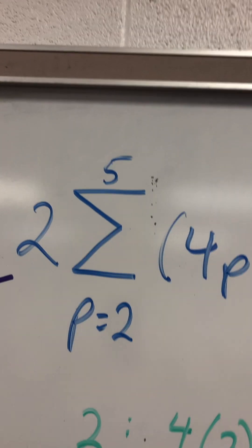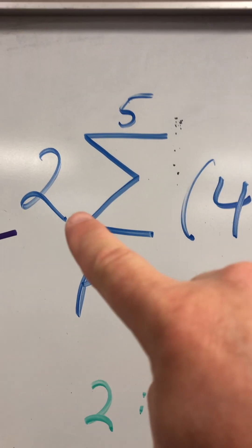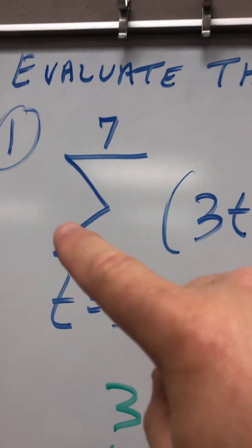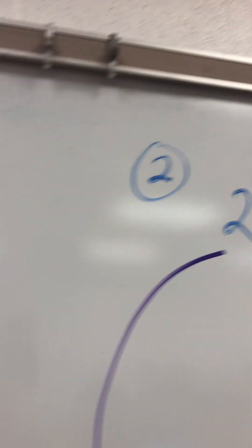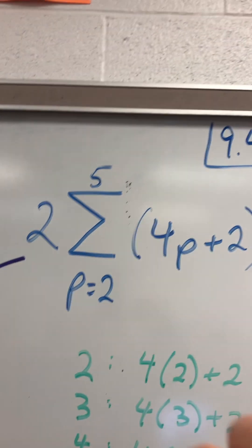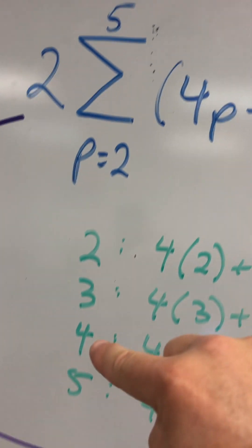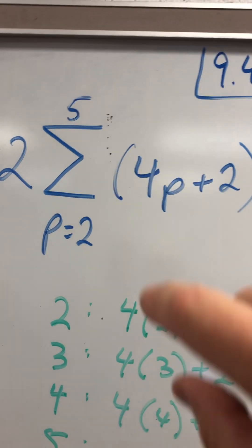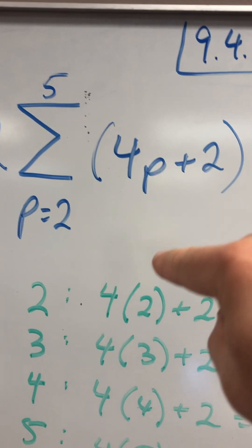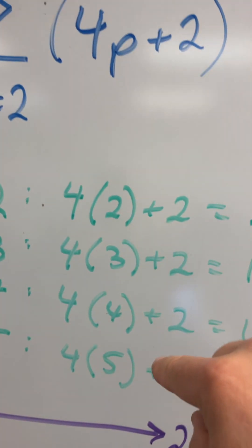Over here, you see how there's a two next to the sigma? There was no number next to the sigma in this one, but there's a number next to the sigma this time. Still, we're going to go from two to five. Two, three, four, five. Instead of P, I'm going to put in two, three, four, and five.